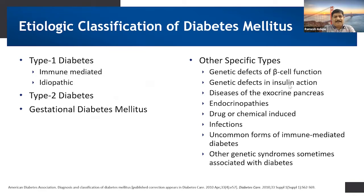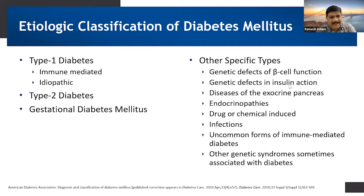Coming to Type 1 diabetes mellitus, it is basically immune-mediated, where the beta islets of Langerhans are completely destroyed. As a result, there is no insulin secretion. It may also be because of unknown reasons that these beta islets lose their potency to secrete insulin. That is what is called Type 1 diabetes mellitus.